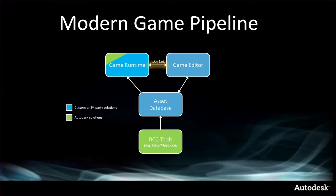More modern pipelines have emerged. We call this the martini glass of deliciousness. The basic idea is you get all your content into an asset database as quickly as possible, where everything can be identified, has an ID, a version number, and multiple representations. This allows your game editor and game runtime to have multiple representations of the same asset and agree on its identity. Things get really cool when those things start talking to each other directly.